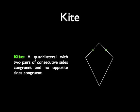In our figure to the right, you can see that the top two segments are congruent to each other and the bottom two segments are congruent to each other. The one thing that we don't have are opposite sides that are congruent. Notice that these opposite sides are not congruent to each other. That's a very important part of the definition of kite, that no opposite sides are congruent.